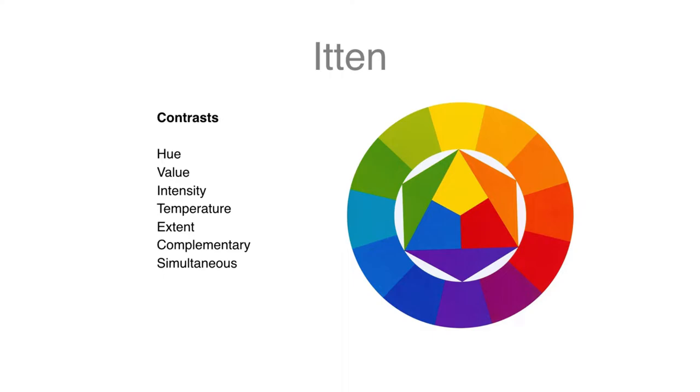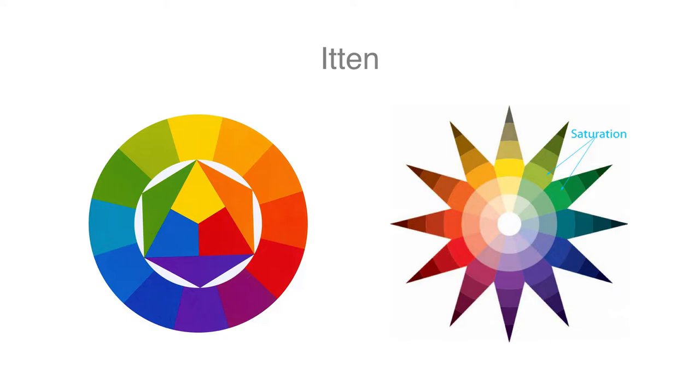The extent or proportion of a color, temperature is the warmth or coolness of a color, intensity, of course, is saturation, the value is the lightness or darkness.